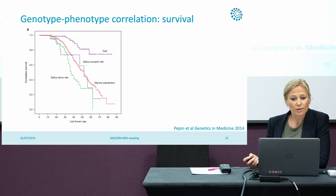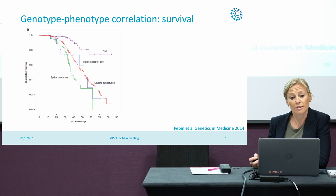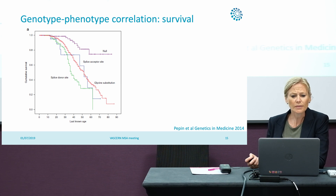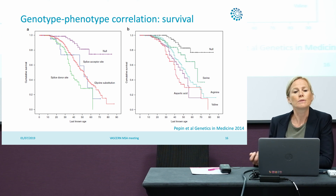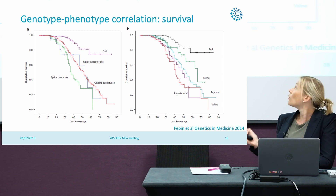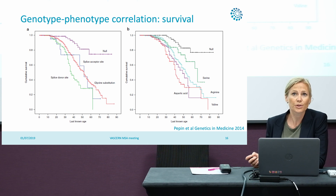They also looked at survival in these patients, and in patients with a glycine substitution or splice variants, survival is worse compared to patients with a null mutation or a haploinsufficient mutation. Looking in more detail at glycine substitutions, it also matters which amino acid replaces glycine. Large amino acids like valine or aspartic acid cause worse survival compared to, for example, the serine substitution.